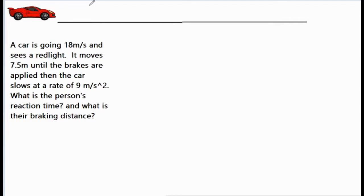So we'll go ahead and label our picture. There's the first portion of the motion where the car is going at a constant velocity.